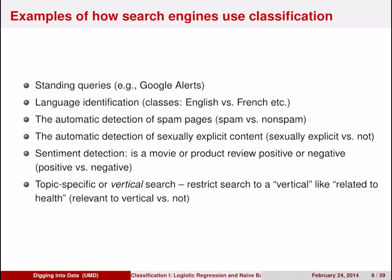Classifiers have been used for many applications. For example, with Google Alerts you can set up a standard query and have Google email you every time that query appears. We can also use classifiers to distinguish what language is being used in a document. And as I talked about in the first lecture, every email you read has been examined by a classifier to determine whether it's spam or ham. Major search engines also use classifiers to determine whether images are family safe or not.